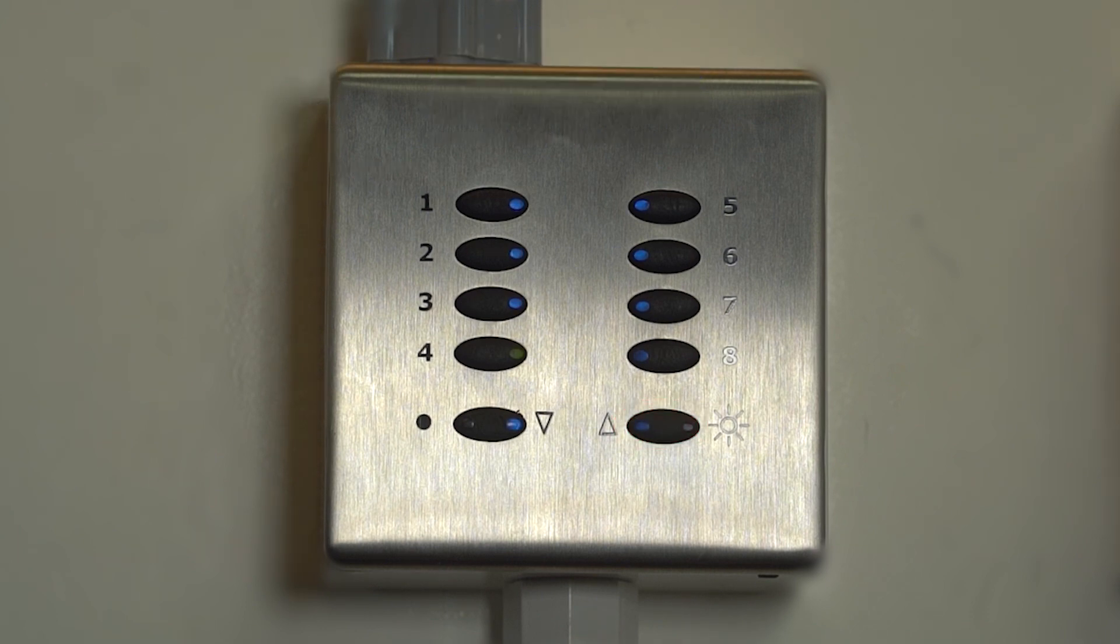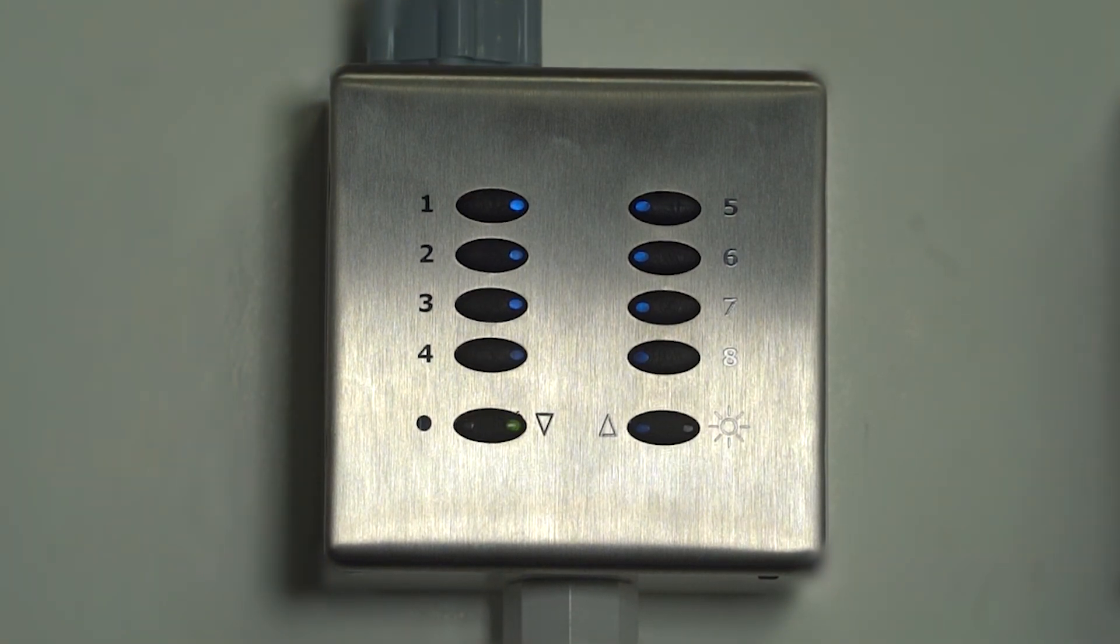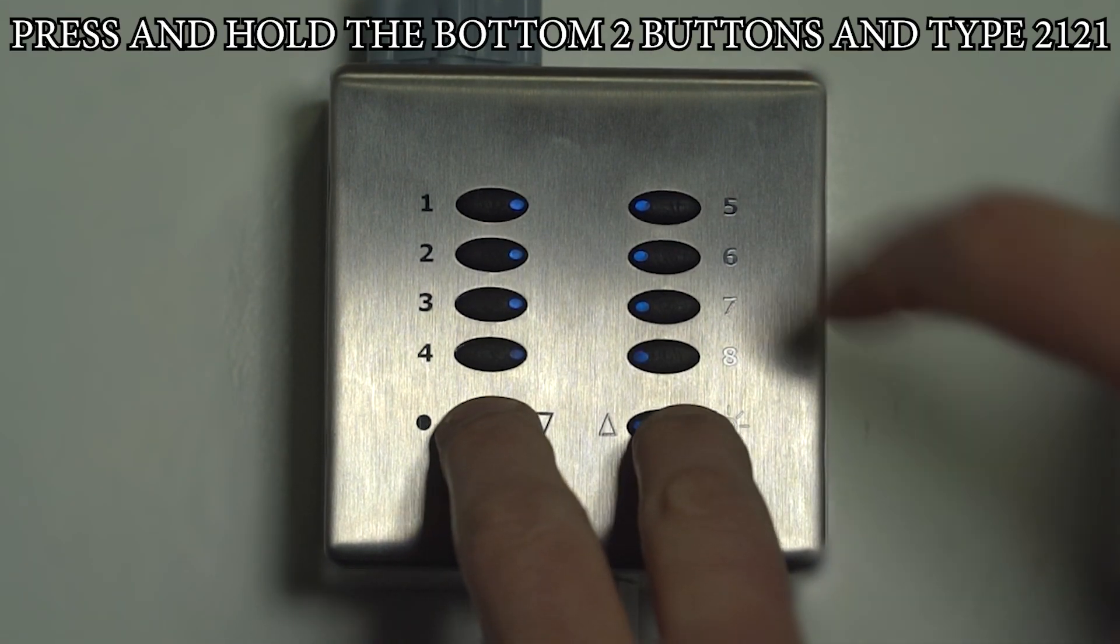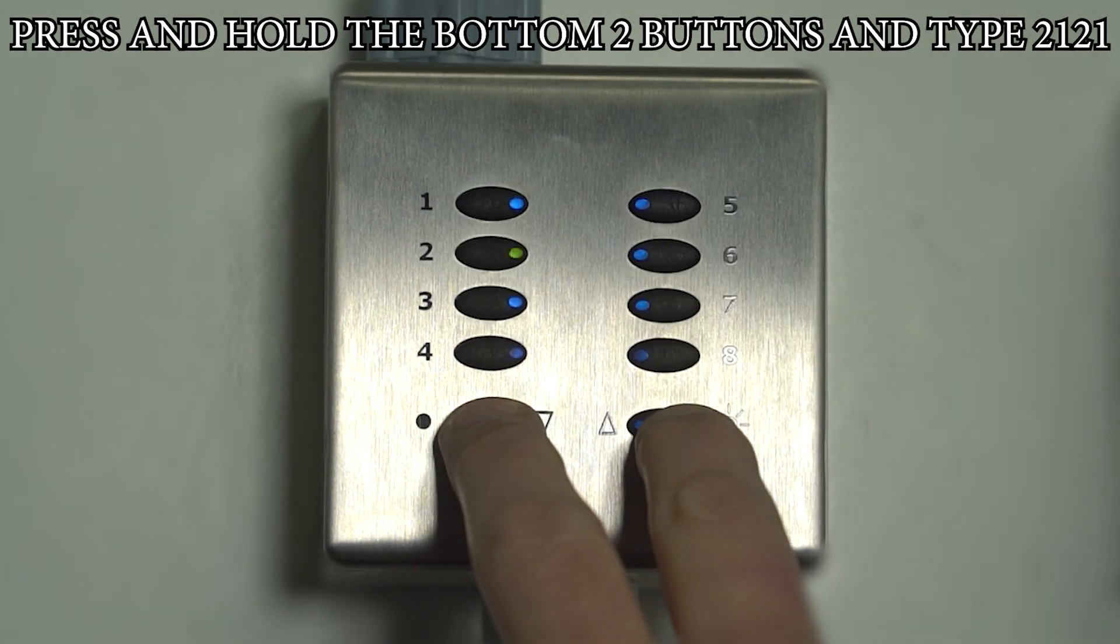If you need to edit any of the levels of the circuits, you will have to go into Programming Mode. To enter Programming Mode, press and hold the bottom two buttons, and then type 2121.